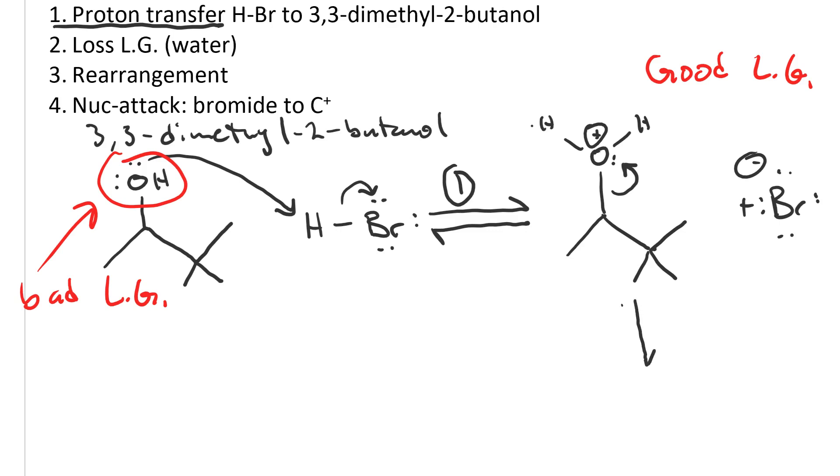In principle, this should be a double headed arrow. So we get a secondary carbocation plus water, which was our leaving group. That is step two of our reaction, loss of a leaving group.